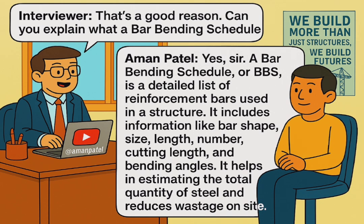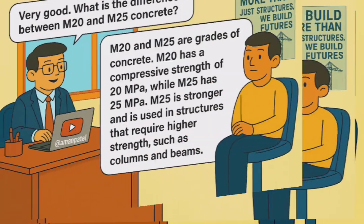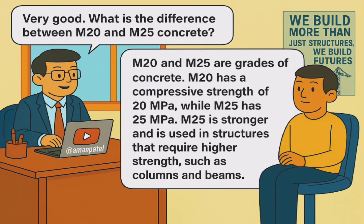That's a good reason. Can you explain what a bar bending schedule is? Yes, sir. A bar bending schedule is a detailed list of reinforcement bars used in a structure. It includes information like bar shape, size, length, number, cutting length, and bending angles. It helps in estimating the total quantity of steel and reduces wastage on site.